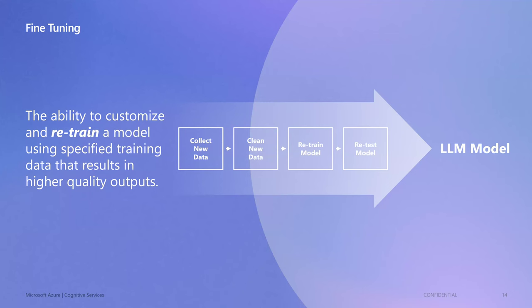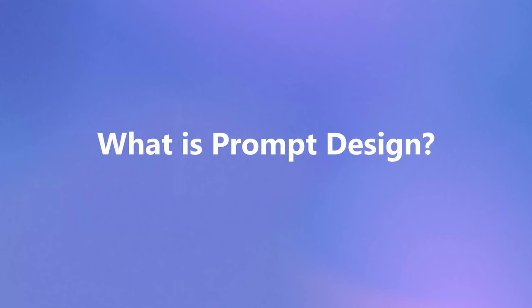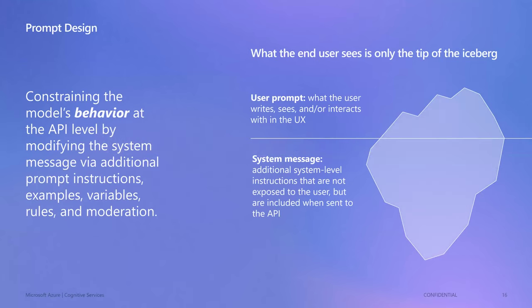The second approach is designing the prompt — being very specific in the instructions you give the model to control how it acts. This is about modifying behavior: not what it knows, but how it acts on what it knows. And importantly, what you type in the instructions is only the tip of the iceberg. Underneath that, the system is sending a system message — a meta prompt — with a whole host of other constructions.